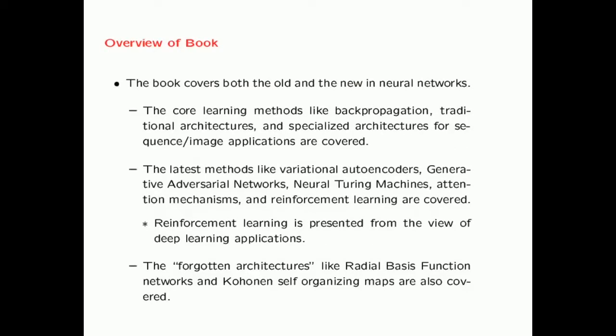This book covers both the old and the new in neural networks. The core learning methods, techniques like backpropagation, traditional architectures and specialized architectures are covered. Among specialized architectures, we cover architectures which work in specialized data domains like image data or speech data. Examples include convolutional neural networks and recurrent neural networks.